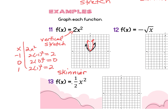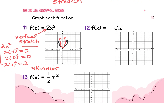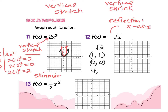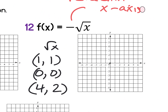The next example is a reflection across the x-axis for the square root — the negative is outside the radical. The square root parent has ordered pairs 0,0; 1,1; 4,2. Graph those, then reflect across the x-axis by placing the points down here, mirroring each point below the x-axis.